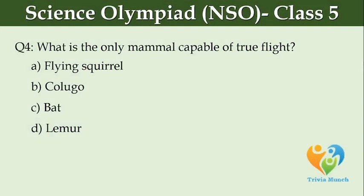Which mammal is able to hold its breath for up to six minutes underwater? Option A: armadillo. Option B: giraffe. Option C: bat. Option D: none of the above. What is the only mammal capable of true flight? Option A: flying squirrel. Option B: colugo. Option C: bat. Option D: lemur.